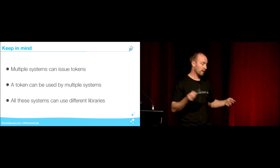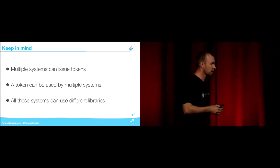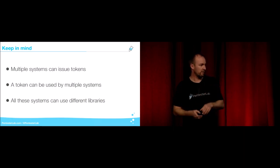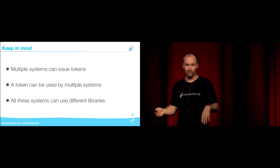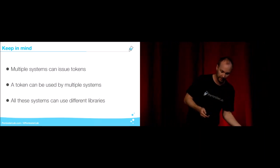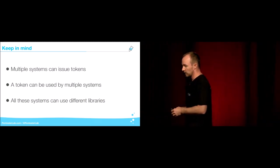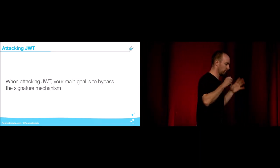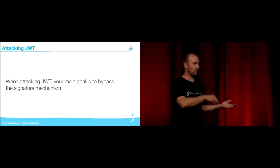Keep in mind that multiple systems can issue tokens. When testing — bug bounty or pen testing — just because one microservice's token is secure doesn't mean they all are. You need to test every combination of issuer versus verifier, and all these systems can use different libraries (Node, Java, Python, Ruby) with different behaviors, and even different versions of the same library. The main idea when attacking JWT/JWS is to bypass the signature — for example, going from a test user to admin.